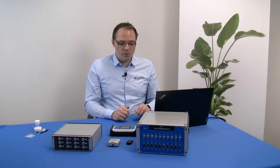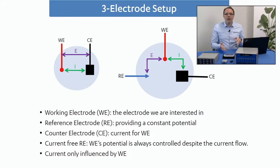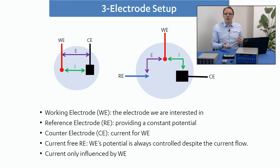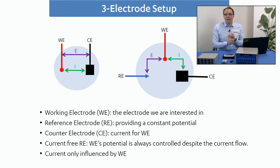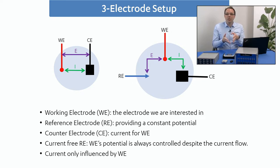When you take a potentiostat and you want to connect it to your experiment, you find that it has three electrodes. In your mind you might think: shouldn't two electrodes be sufficient? That's enough for a current to flow. Why does a potentiostat have three electrodes? We have three electrodes because we need a working electrode, which is the electrode where the electrochemistry is happening that we're interested in — where we want to apply a potential and then measure the current that's flowing there.